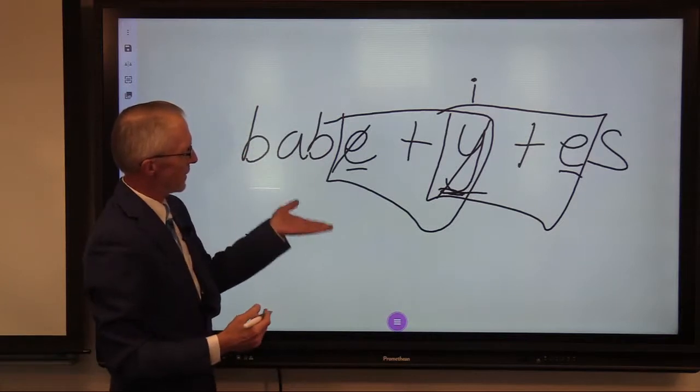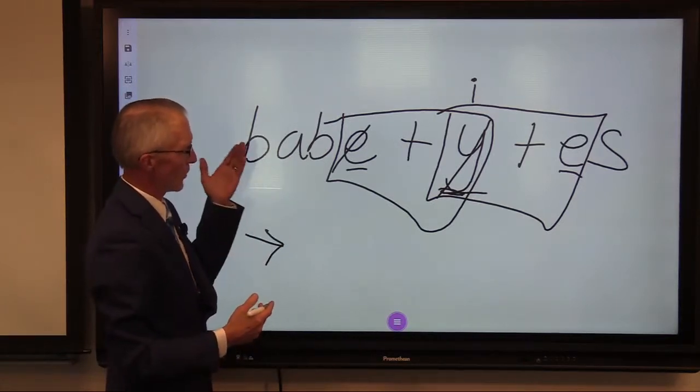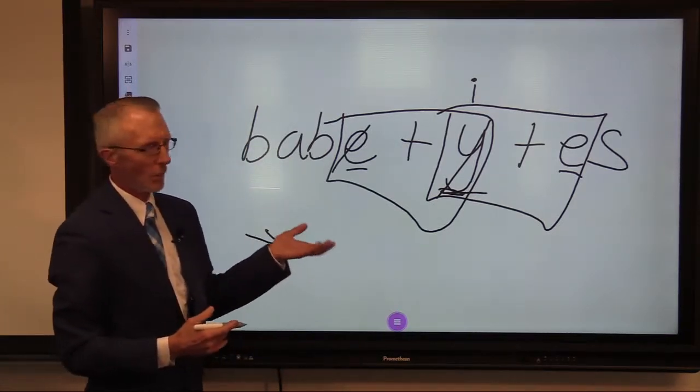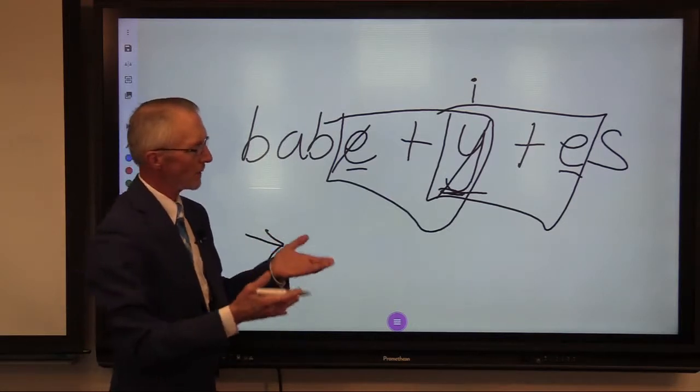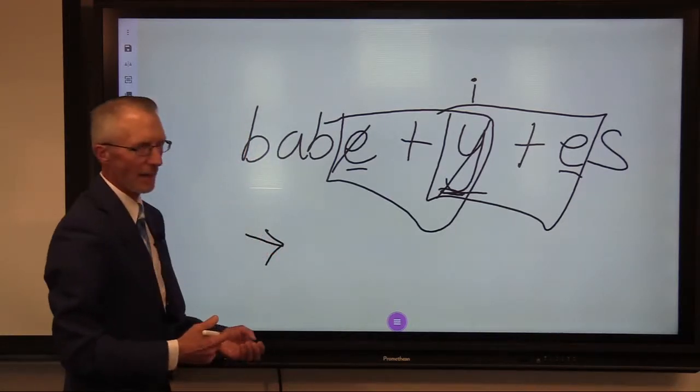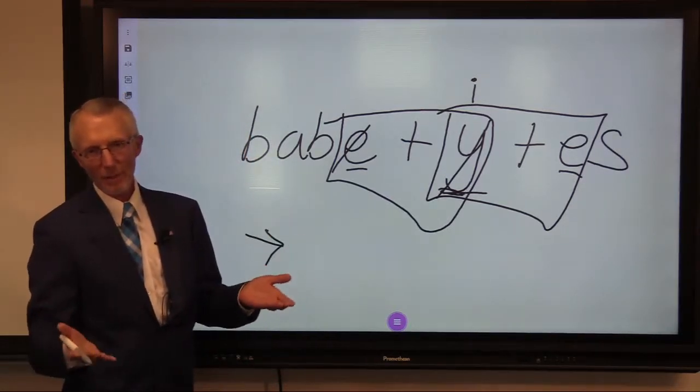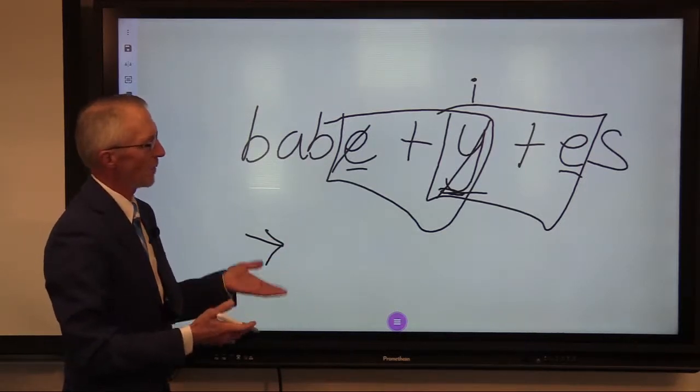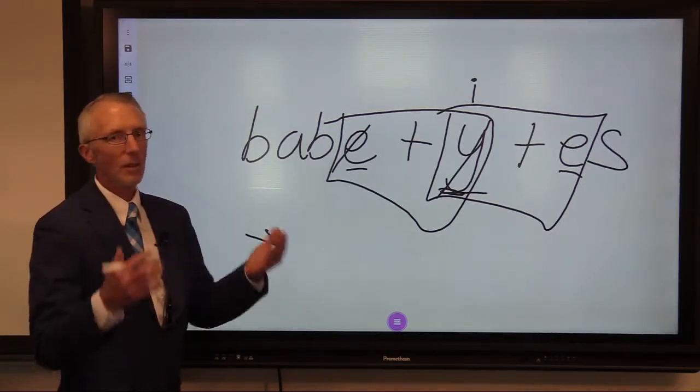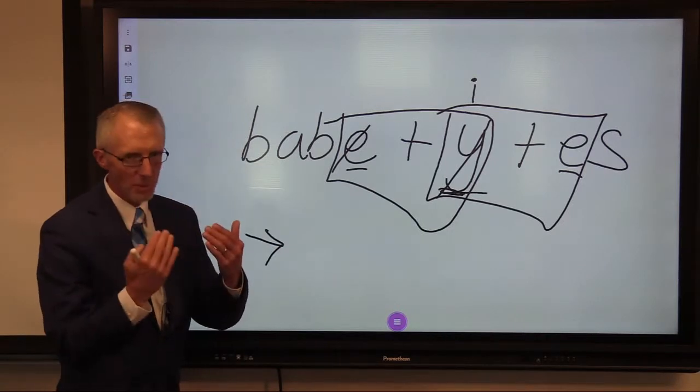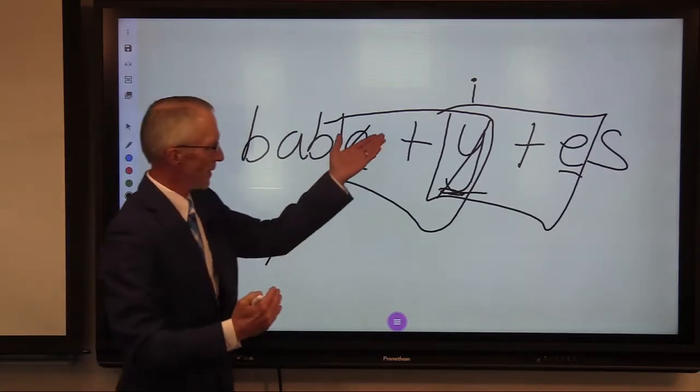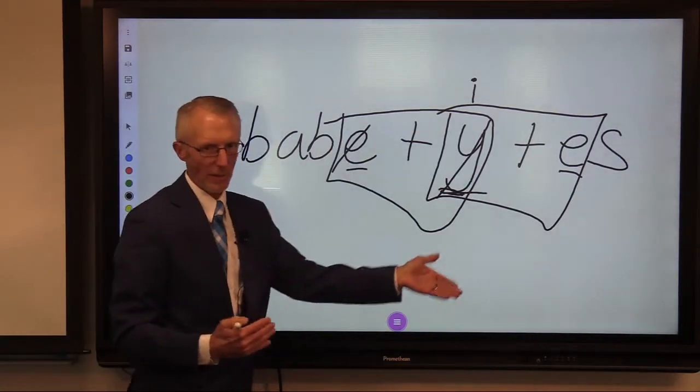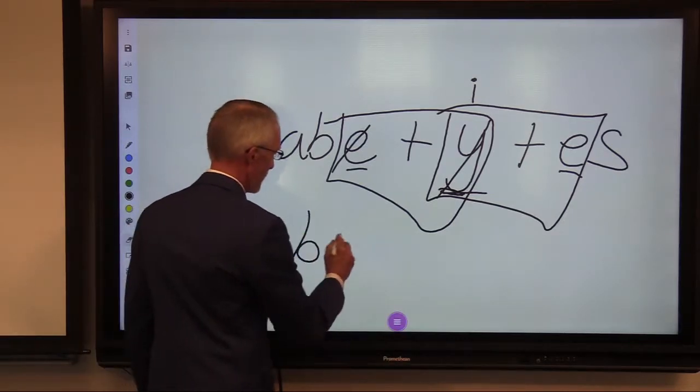So now I have here, I have two suffixal conventions to make the word babies. B-A-B single non-syllabic E, we replace the E plus Y, do a Y-I toggle, plus E-S, is rewritten as B-A-B replace the E, Y-I toggle, E-S. Notice the pause. I ask children to pause between them so they know they're signaling that there's a break there. And your word looks like this.